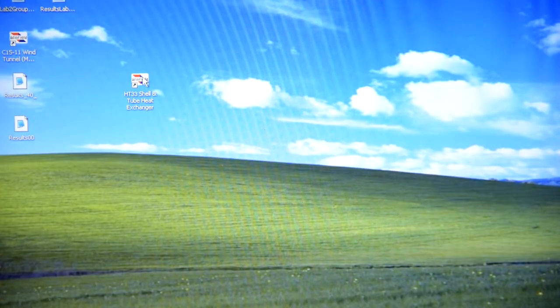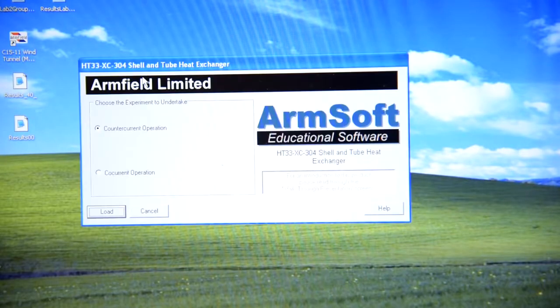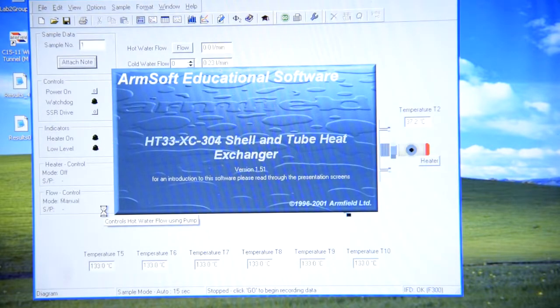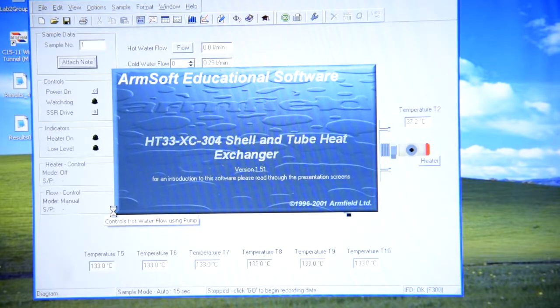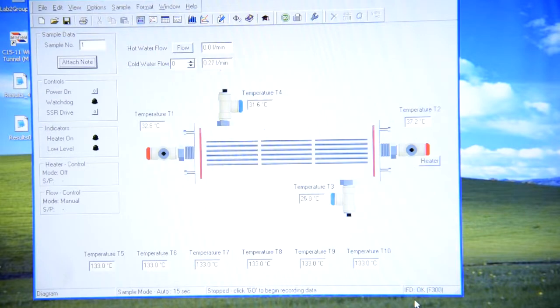First of all, you should open the shell and tube heat exchanger software, solid co-current operator. If the connection is alright, IFD should be OK. Then you should press power on and the green light should be illuminated.